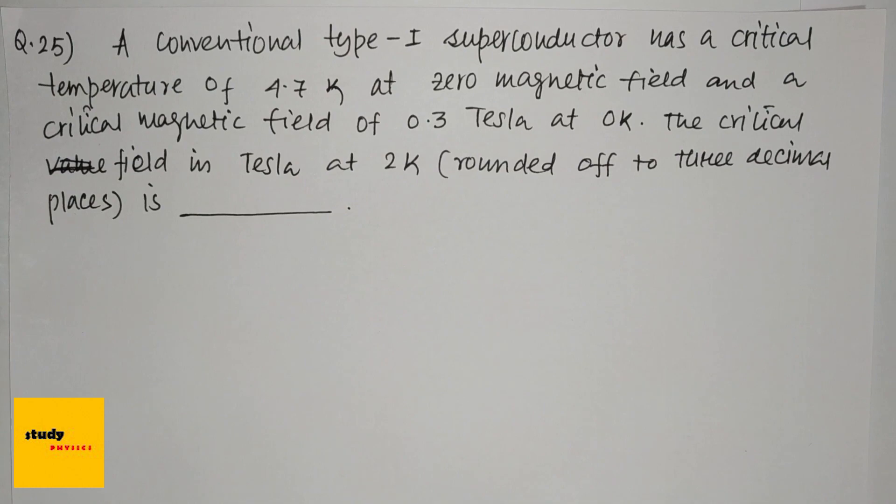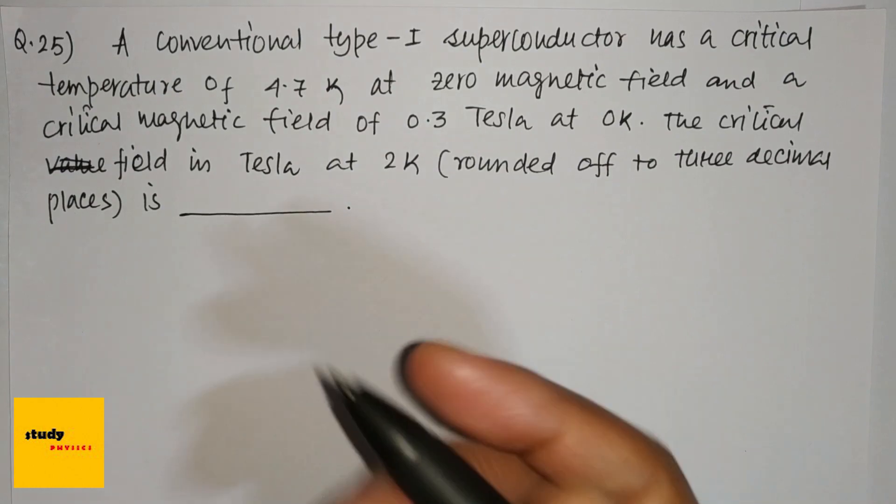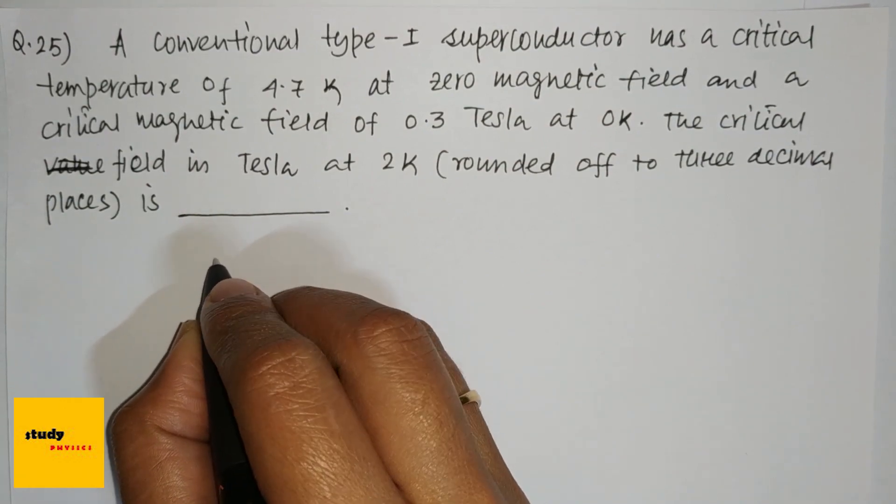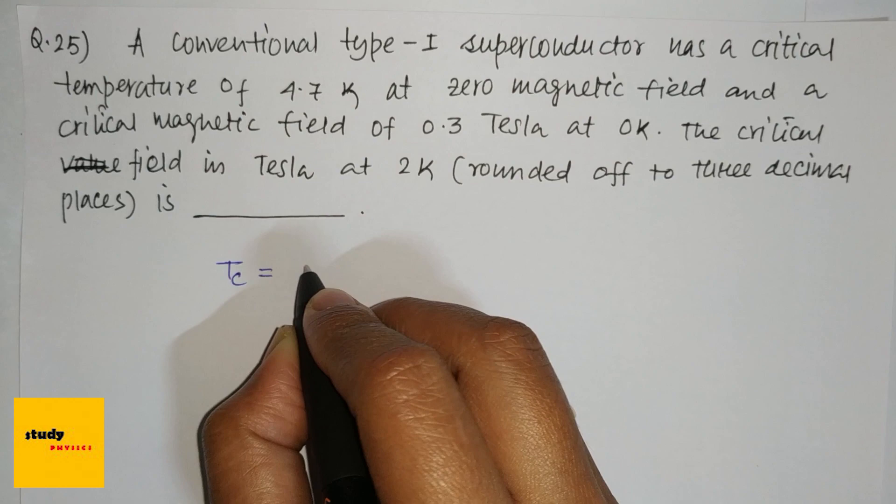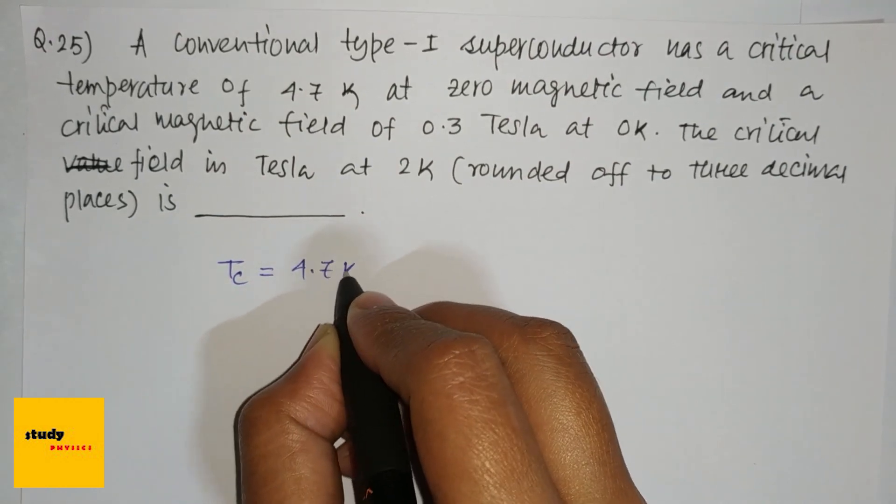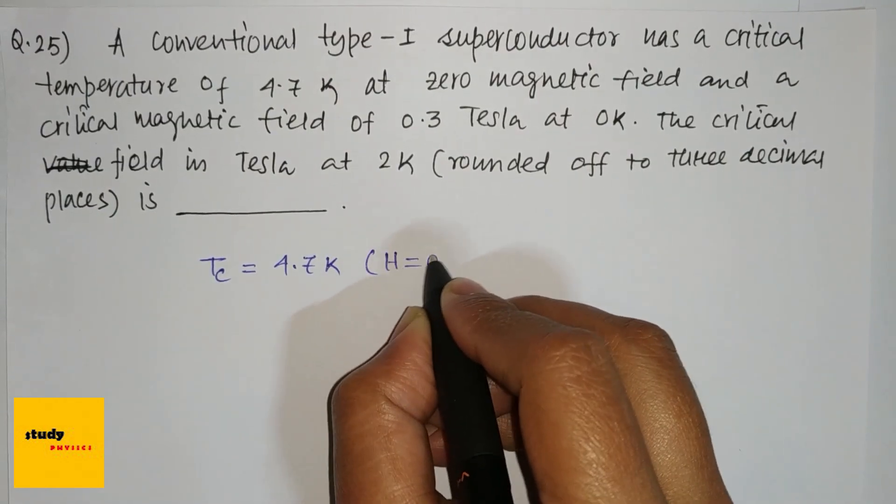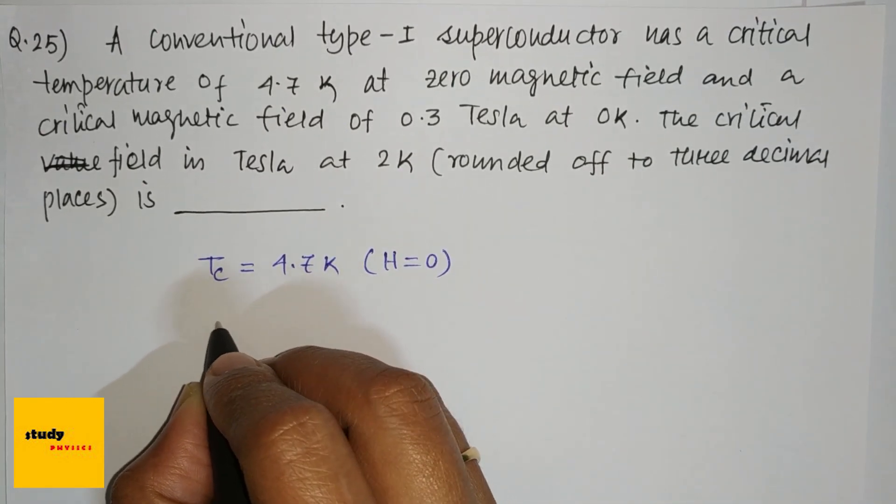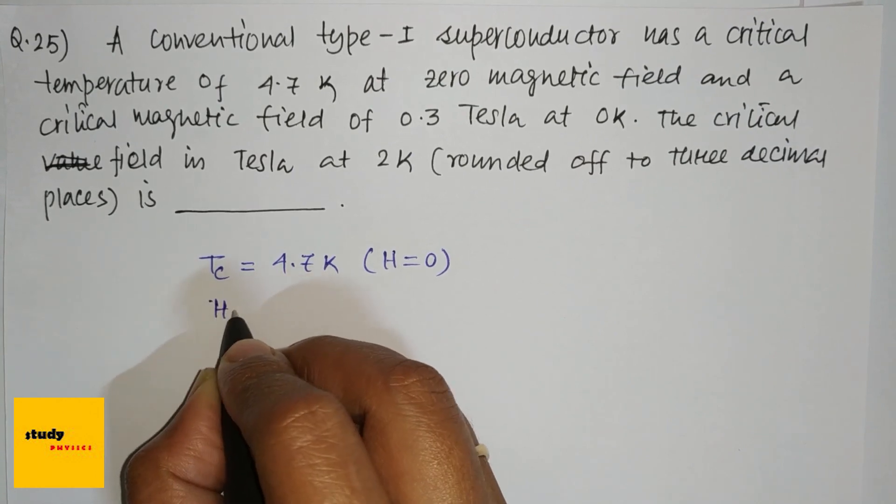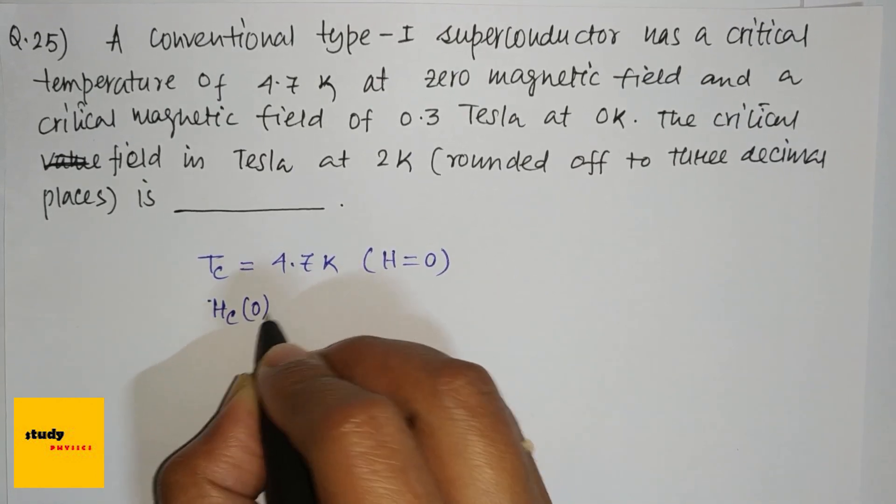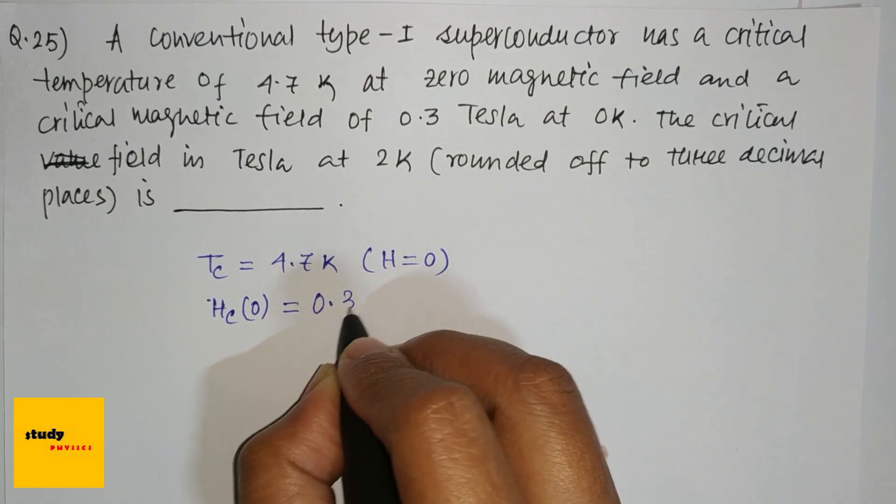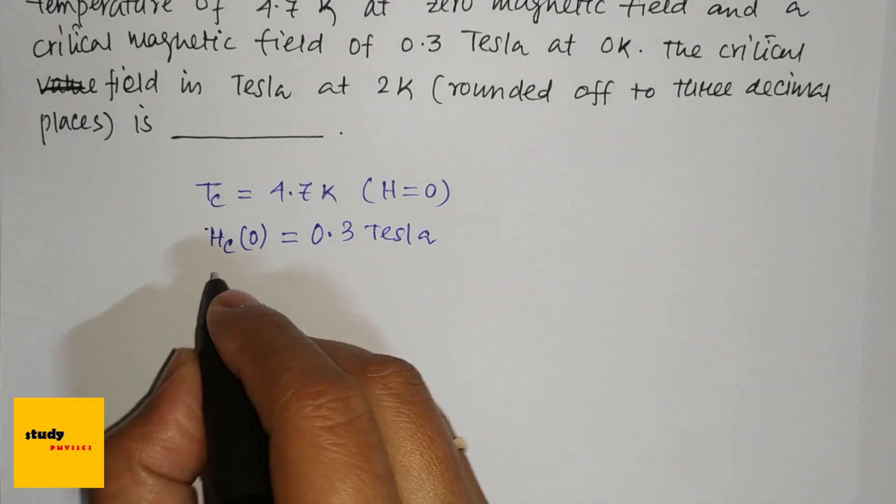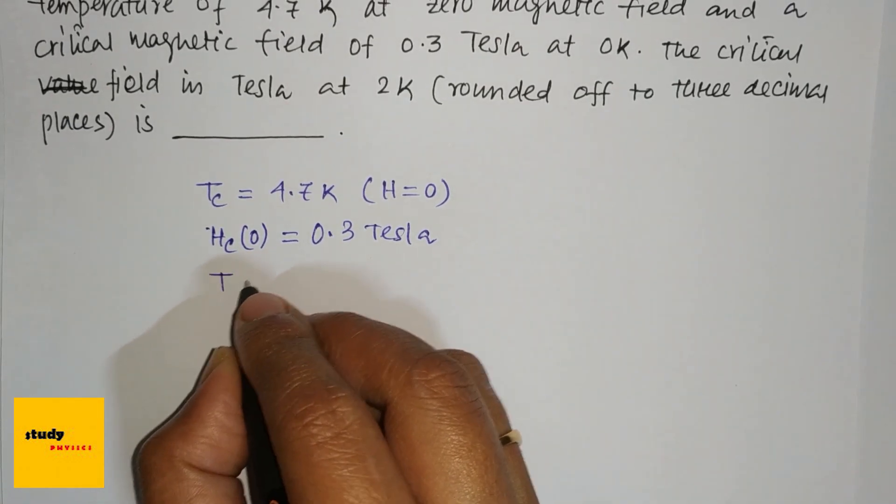The critical field in tesla at 2 kelvin is what we need to find. So we have the critical temperature Tc equals 4.7 kelvin at H equals 0, and the critical magnetic field Hc of zero equals 0.3 tesla at zero kelvin.